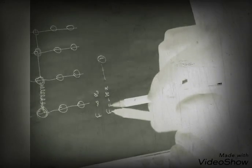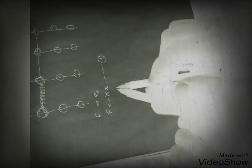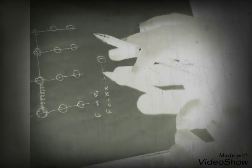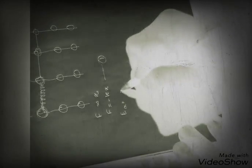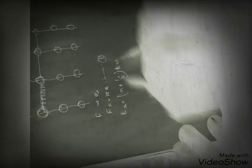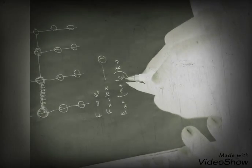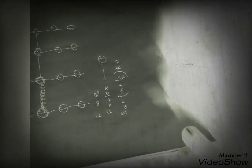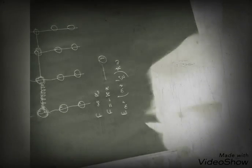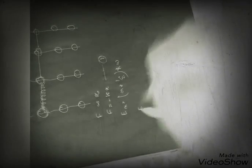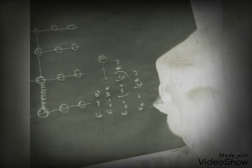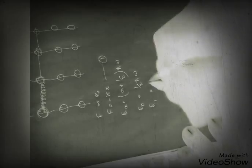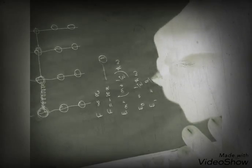If we have a simple harmonic motion, we can use the energy eigenvalue. En is equal to n plus half, times ħ squared omega. If n is any integer, we can apply this. If n equals zero, the energy is equal to half ħ squared omega, which is the zero-point energy.